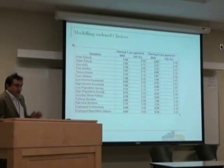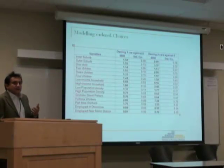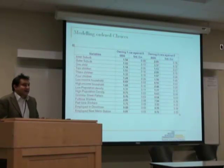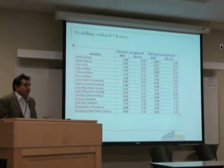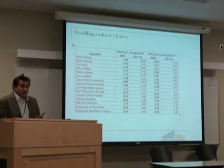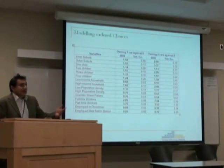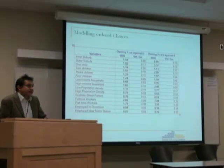You would also notice that we have two sets of coefficients. Remember that we have taken the automobile ownership variable and categorized it as zero cars, one car, and two or more cars. We have used zero cars — that is, not owning a car — as the base reference case. The two sets of coefficients presented here are owning one car against zero. You always compare the likelihood of an event based on a comparison with the base category.